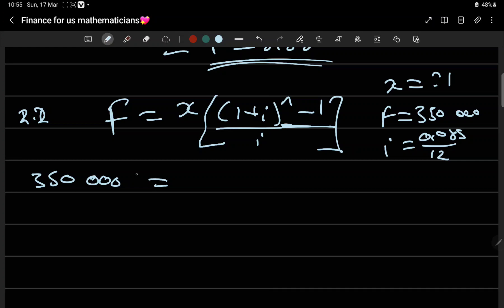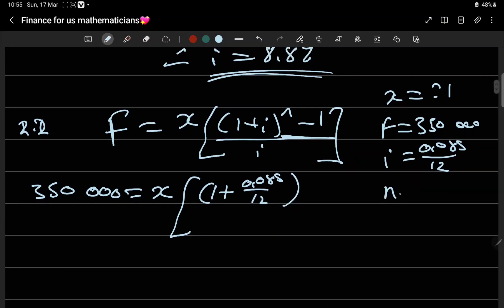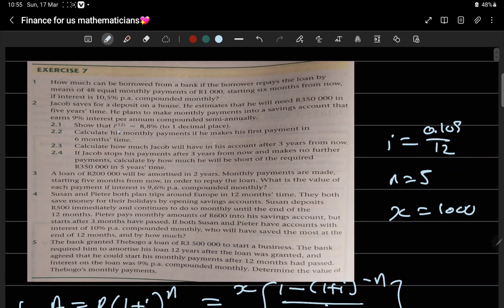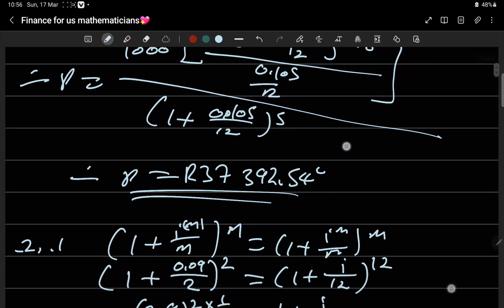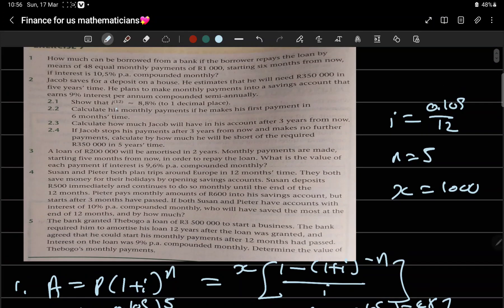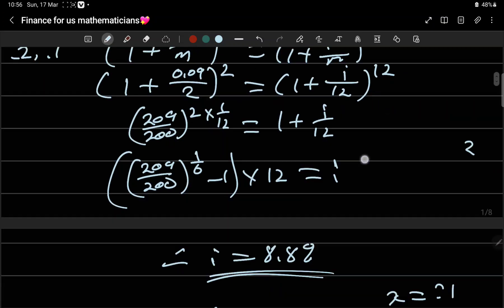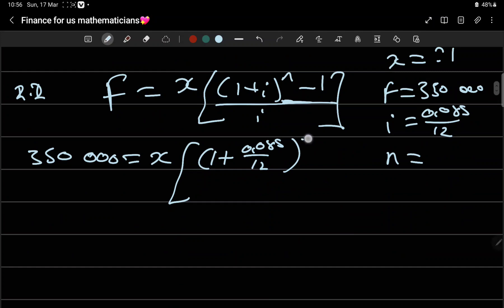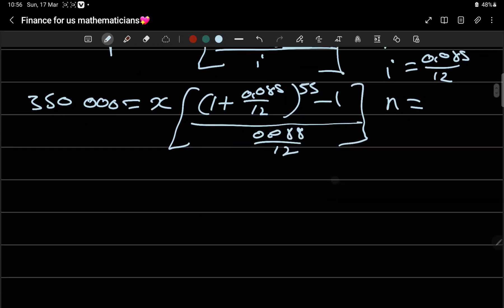The f will gain interest for those first five months. It's five years time, so 5 times 12 = 60. You subtract because it started in 6 months time. Subtract 5 because for the first 5 months he didn't pay, then started to pay on the 6th month. So this is 55. The formula becomes: f(1 + 0.088/12)^5 = x[(1 + 0.088/12)^55 - 1] / (0.088/12).